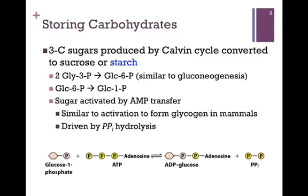At the bottom of the slide, we start with glucose-1-phosphate and we're going to activate the sugar by AMP transfer. This should look very similar to the activation of glucose to form glycogen in mammals, except in this case our donor molecule is ATP. AMP is transferred from ATP to that number 1 position of glucose to form ADP glucose, with the release of inorganic pyrophosphate. As indicated by the double arrows, it's readily reversible.